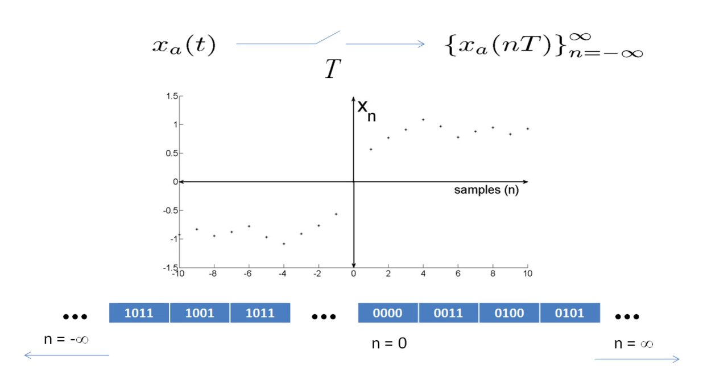This sampling process is represented schematically by a switch that opens and closes periodically with period T. Every time the switch closes, the value of X sub A of T is measured and quantized into a binary number that is stored in registers or computer memory.